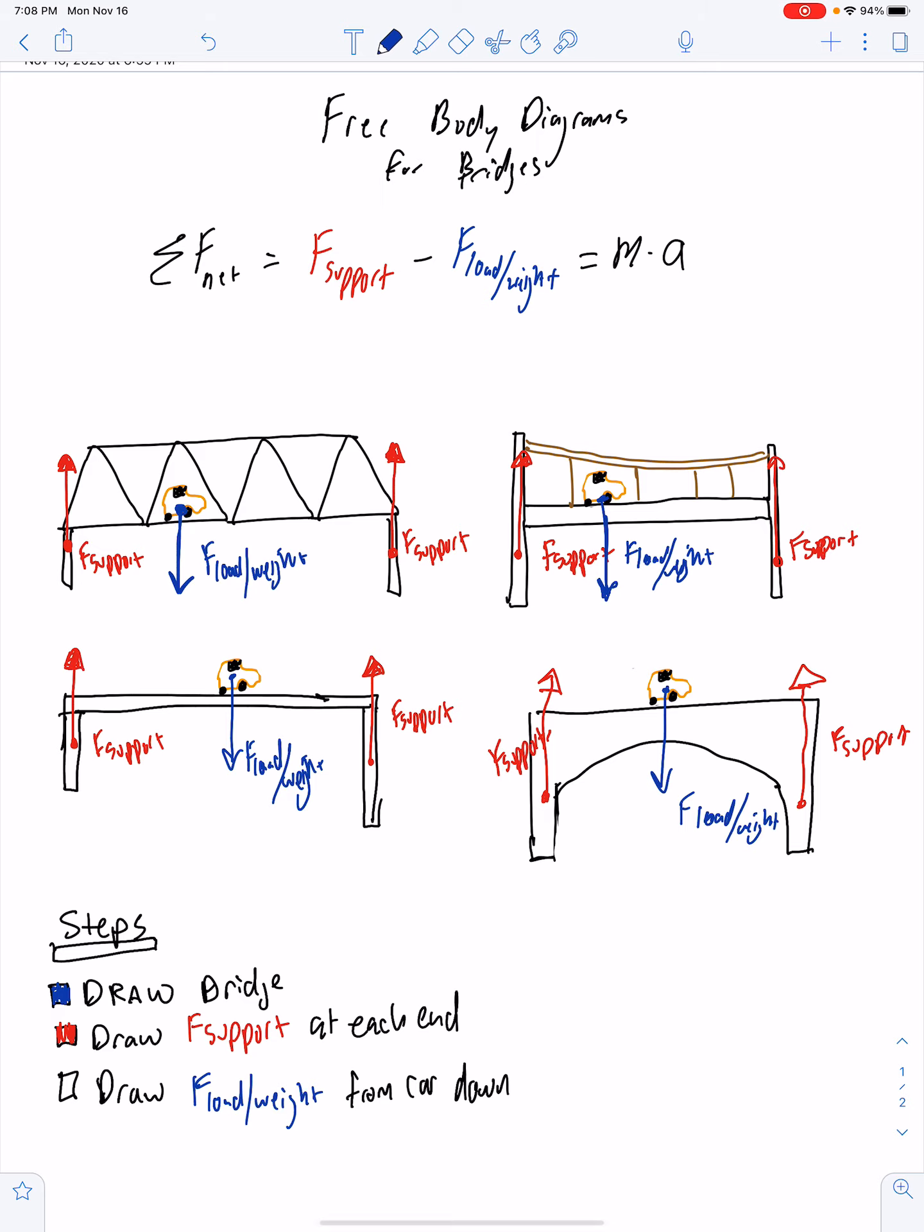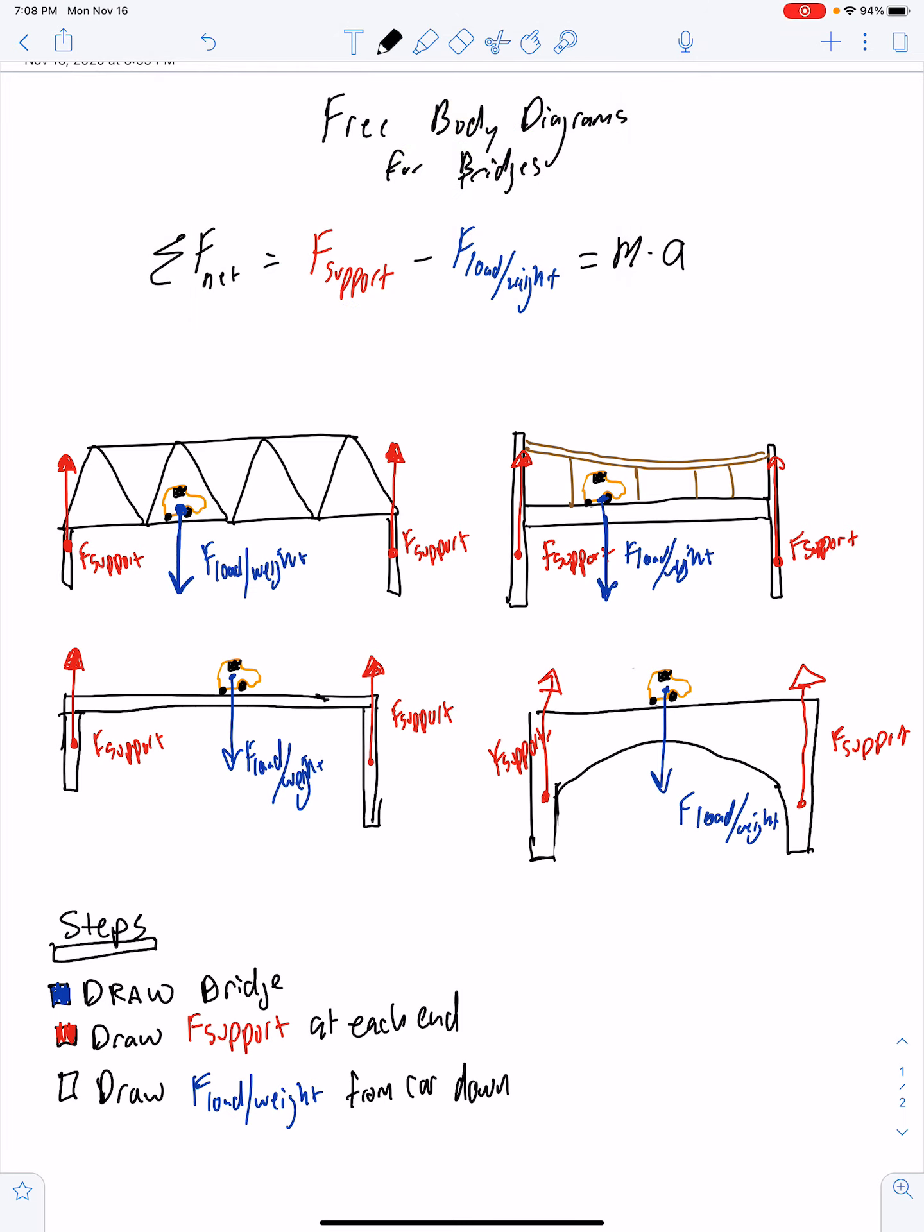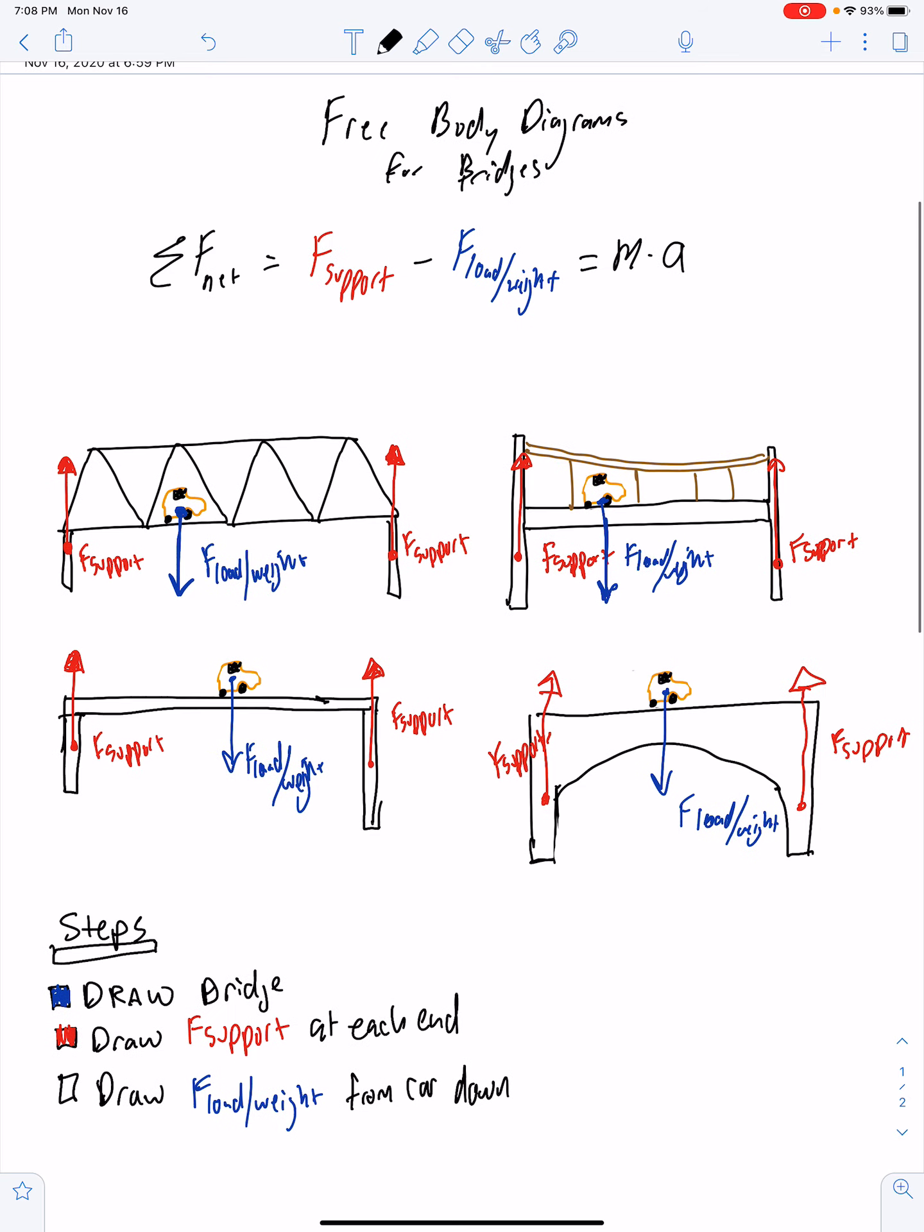Okay, and of course, remember, in order to get this net force equation, we look at our free body diagram. We have two forces upwards, one force down. And so we have arrows pointing in opposite directions, so we know that they'll subtract. So we say that we have the support force minus the load slash weight of the bridge. And that's equal to the mass of the bridge times the acceleration of the bridge.